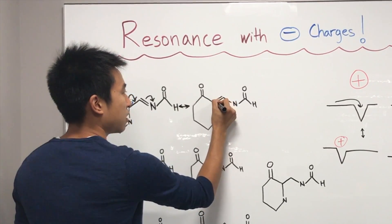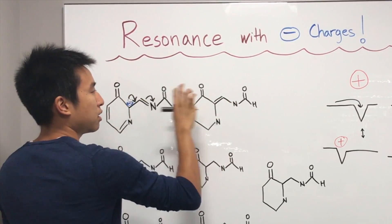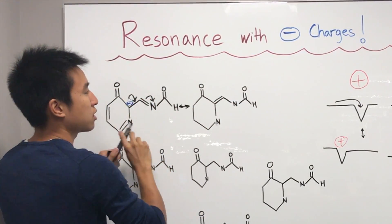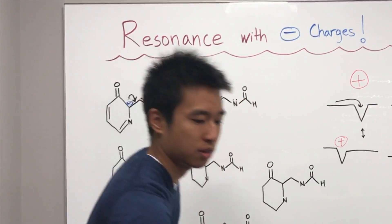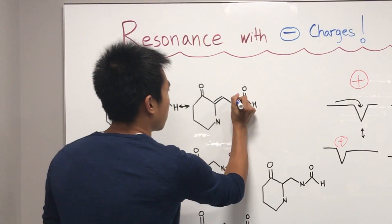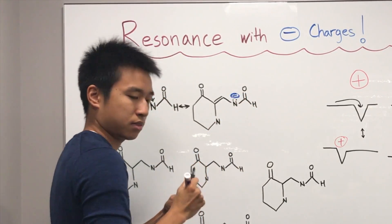All right. So here we go. This is now a double bond. These two electrons are now in the bond like that. And then these two electrons are now on the nitrogen as a lone pair. All right. There we go.